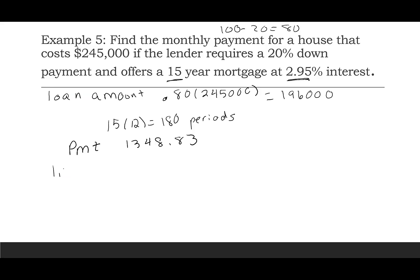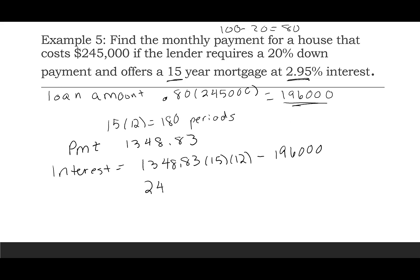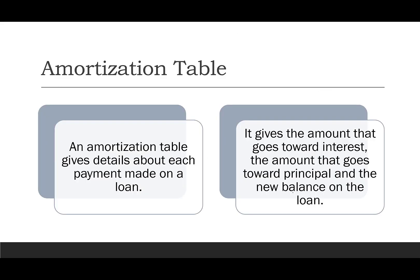Now let's find the interest paid on this loan. Total paid: $1,348.83 × 15 × 12 = $242,789.40. Subtract the $196,000 financed, and the interest is $46,789.40. Pay attention to whether you're being asked for interest on the loan or total amount spent on the house.